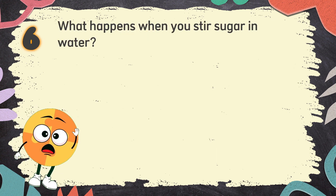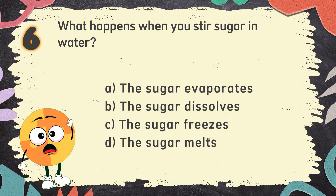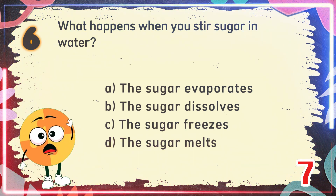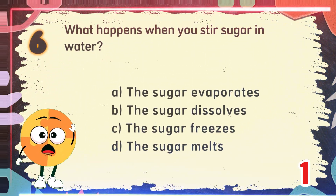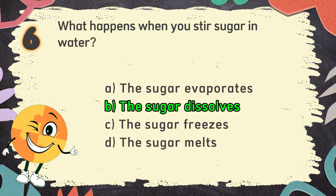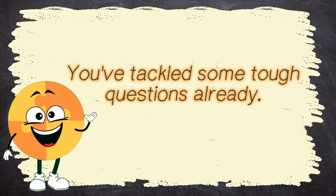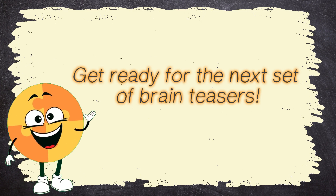Number 6. What happens when you stir sugar in water? The choices are: A. The sugar evaporates. B. The sugar dissolves. C. The sugar freezes. D. The sugar melts. The correct answer is B: The sugar dissolves.